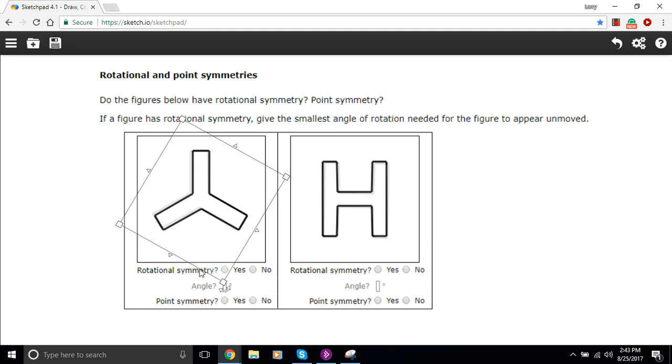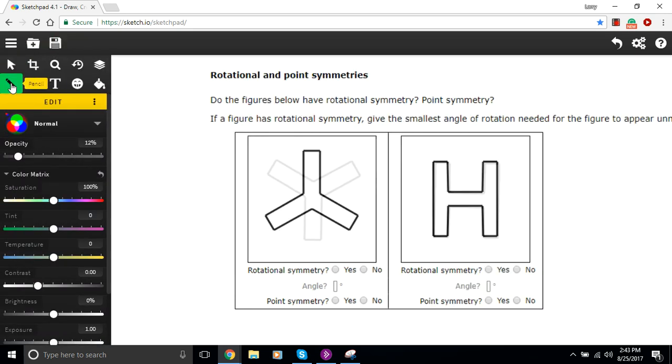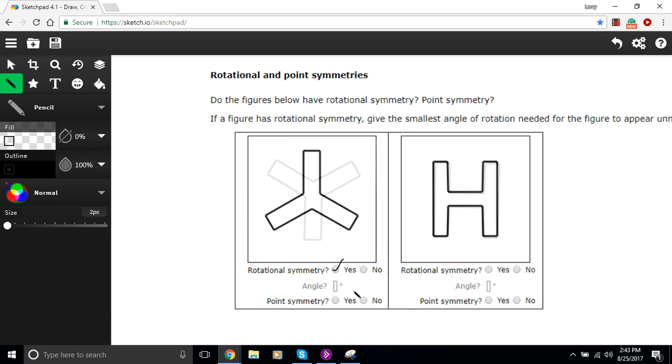Now point symmetry says that if you rotate a figure 180 degrees around a point, so let's start back at the beginning on this one and we'll just rotate this 180 degrees. I'm just going to turn it upside down. And that is definitely not the same figure. So this first one has rotational symmetry with an angle of 120 degrees. That's its smallest angle of rotation, but it does not have point symmetry.